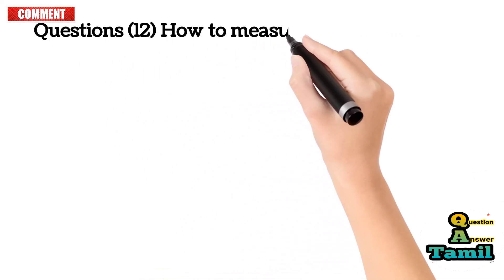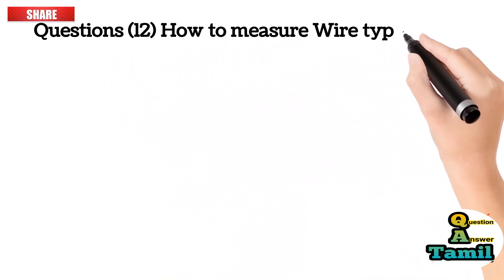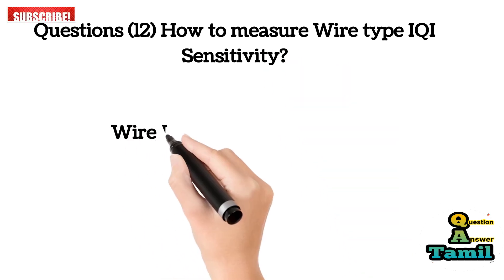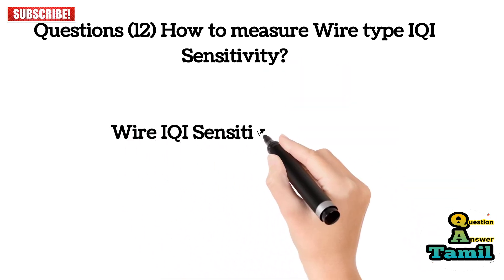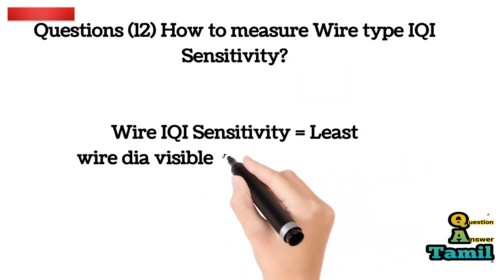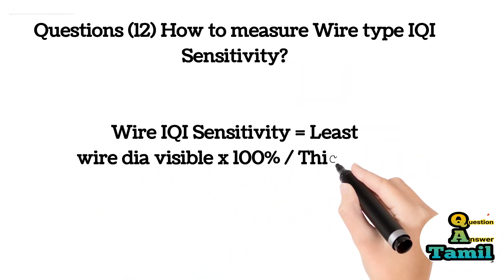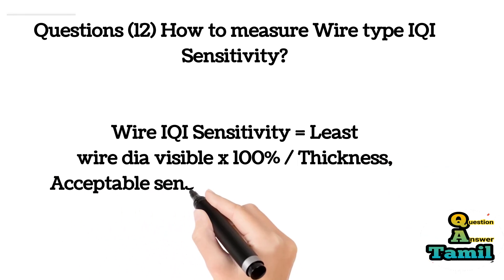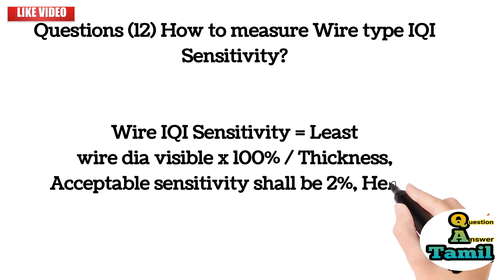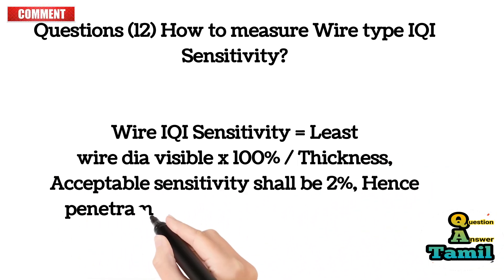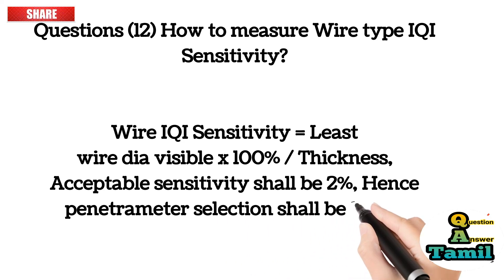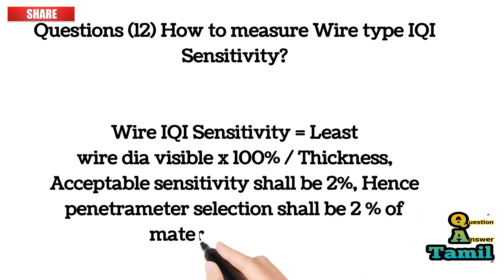Question 12: How do you measure wire type IQI sensitivity? Wire IQI sensitivity equals the least wire diameter visible divided by material thickness, multiplied by 100%. Acceptable sensitivity shall be 2%; hence penetrometer selection shall be 2% of material thickness.